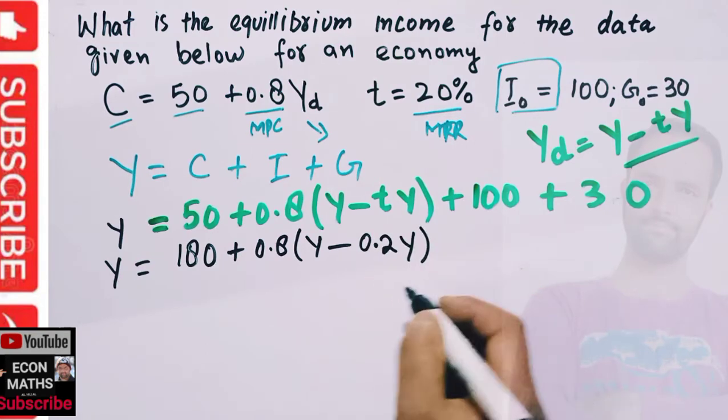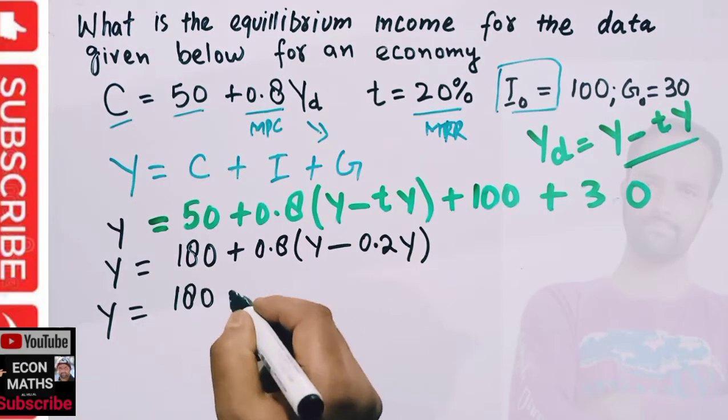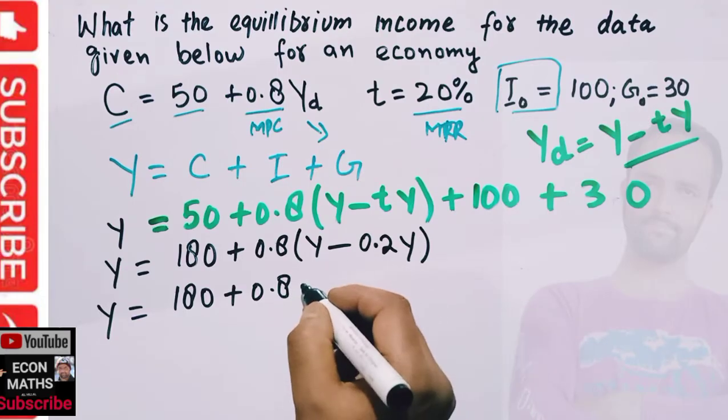Then we have Y = 180 + 0.8Y. If we subtract 0.2Y from Y, we are left with 0.8Y.